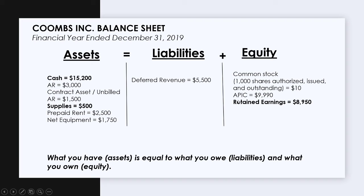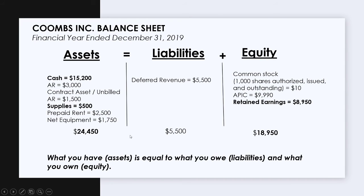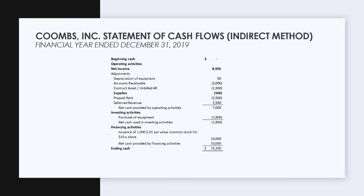That's how to read these financial statements. We'll make sure that our assets equal liabilities plus equity. Adding everything up, we get $24,450 — $5,500 plus $18,950 equals $24,450. Assets equal liabilities plus equity, so we're okay on that front.